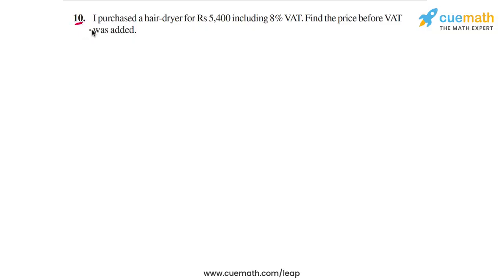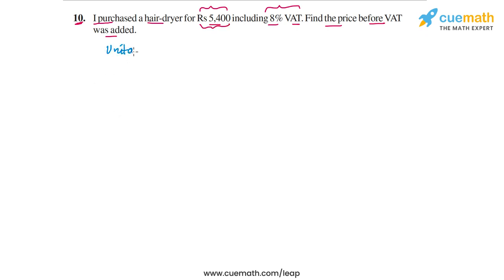In question 10 of the exercise, the problem statement is as follows: I purchased a hair dryer for rupees 5400 including 8% VAT. So this total price of 5400 includes 8% VAT. We have to find the original price, given that after including 8% VAT the total price was rupees 5400.